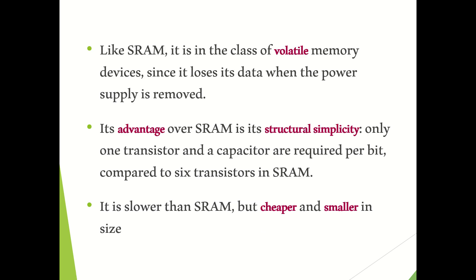We know that RAM is a volatile type of memory — whenever the power supply is cut, all the information inside the chip will be lost. Dynamic RAM is also volatile: if the current is lost or the power is off, we will lose all the information stored inside the capacitors.